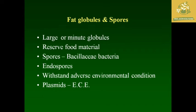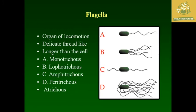Flagella are the organ of locomotion, known as delicate thread-like structures longer than the cells. You can classify flagella in different organisms: monotrichous, where one flagellum is present at one end; lophotrichous, where more flagella are at one end; amphitrichous, where flagella are present at two different ends; peritrichous, where multiple flagella are present all around them; and atrichous, where no flagella are present.